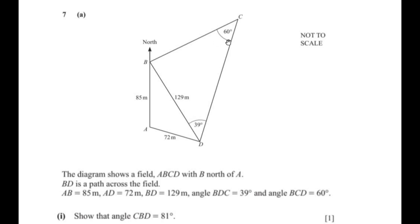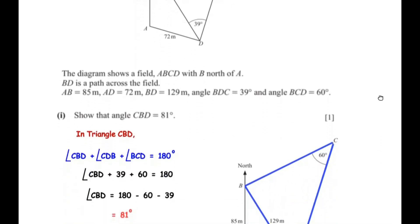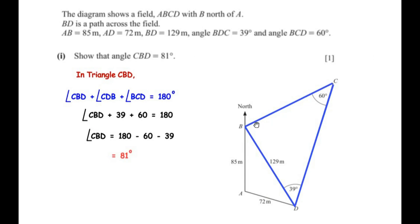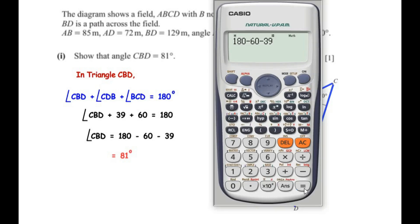We consider triangle CBD. To find angle CBD, we use the angle sum property of the triangle: angle CBD + angle CDB + angle BCD = 180 degrees. Angle CDB is 39 degrees and angle BCD is 60 degrees. Taking those to the other side: angle CBD = 180 − 60 − 39 = 81 degrees.